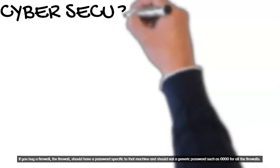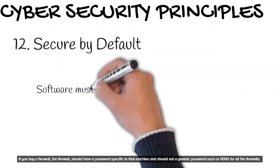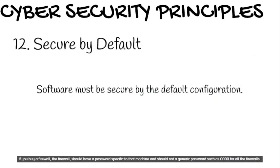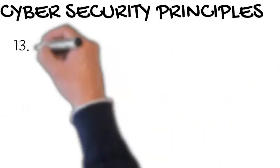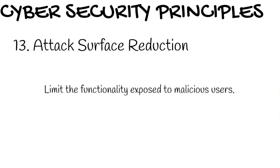12. Secure by default. Software must be secure by its default configuration. For example, if you buy a firewall, it should have a password specific to that machine and not a generic password such as 0000 shared across all firewalls. 13. Attack surface reduction. Limit the functionality exposed to malicious users.